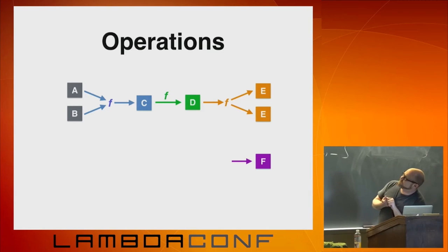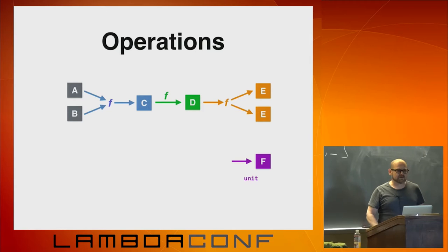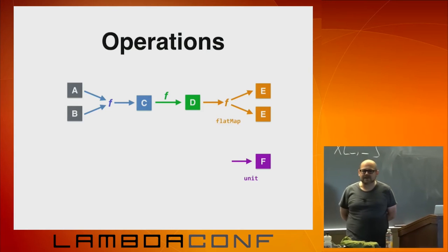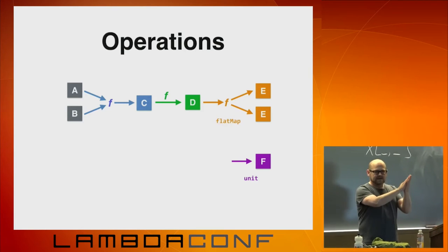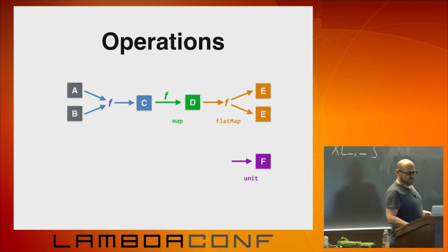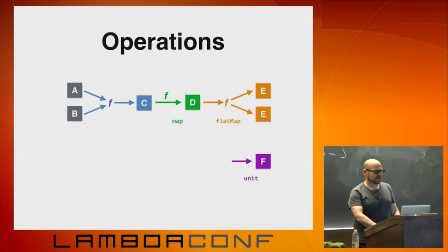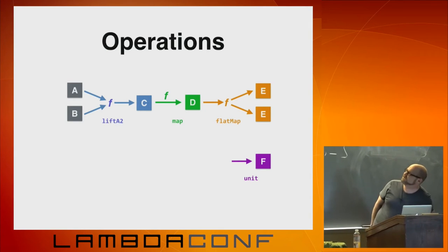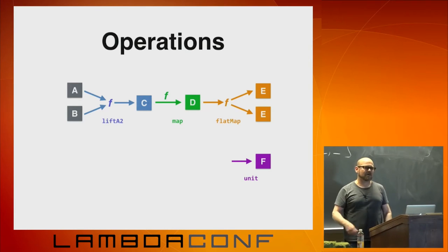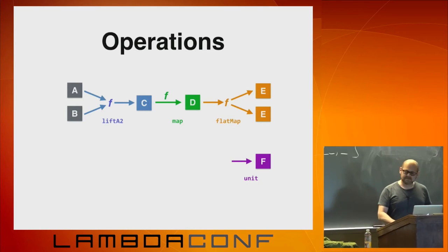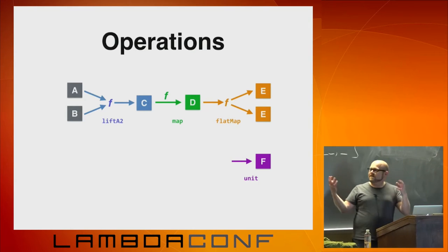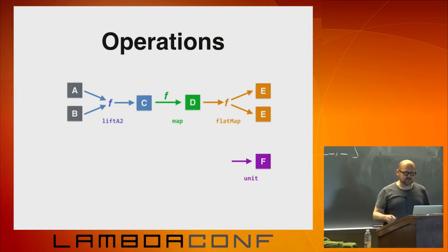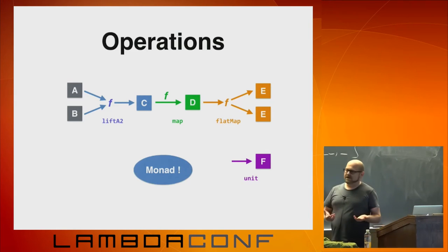These are well-defined operations. The purple one is just monadic unit. The orange one is flat map — it takes some value from some computation and you can look at it and use that to determine the next computation. The one in the middle is just map. And the first one is called liftA2 — we'll see that later and just use the applicative operator instead. So if we want to combine these little primitive operations, what we really want is a monad.